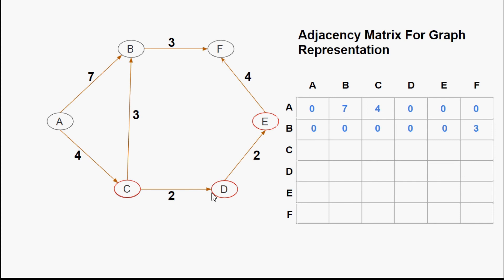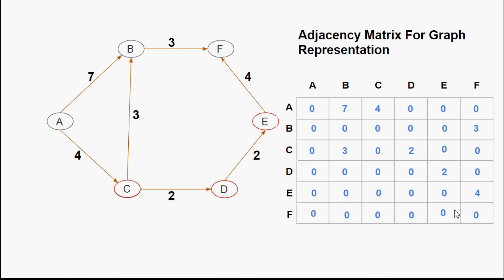For vertex C there are two outward edges: from C to B the cost is three, and another outward edge from C to B with cost two. For the rest there is no outward edge so I write zero. For vertex D there is only one outward edge towards E with cost two. For vertex E there is one outward edge towards F with cost four. For vertex F there are no outward edges — only inward edges — so the cost is zero for every entry.